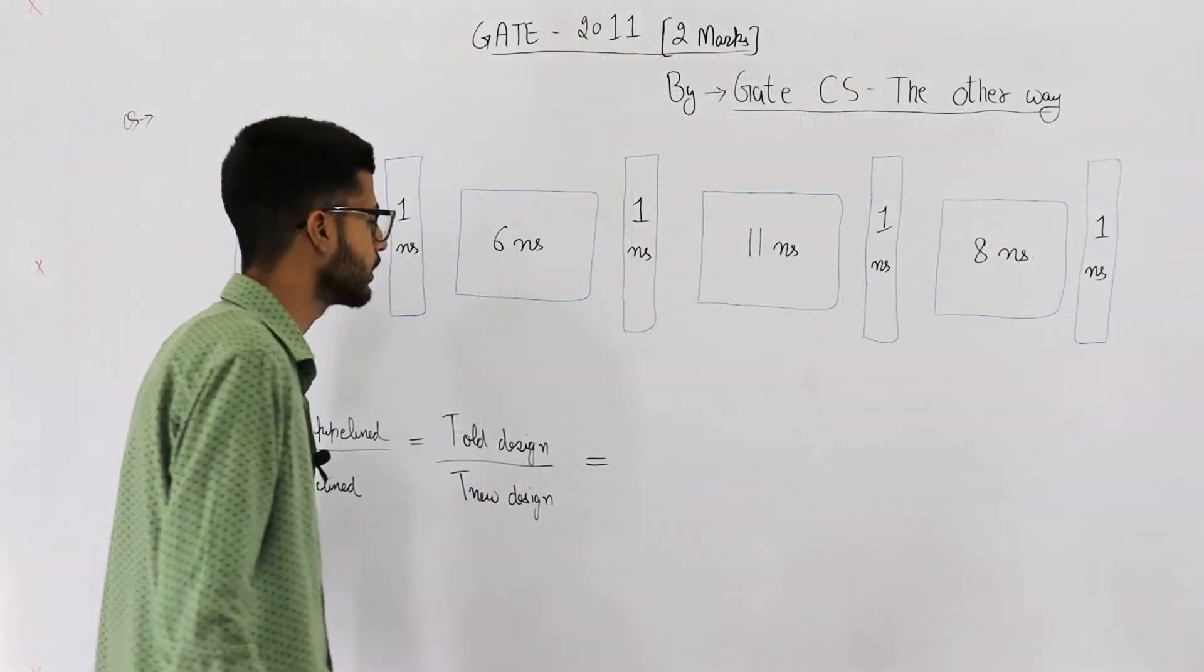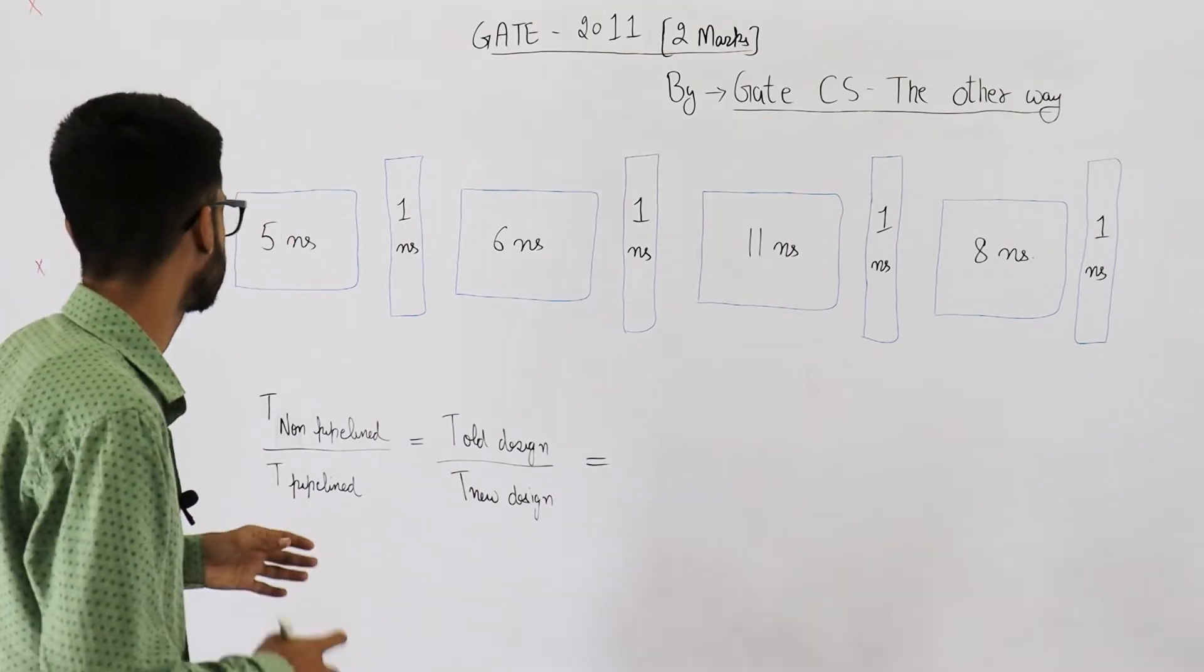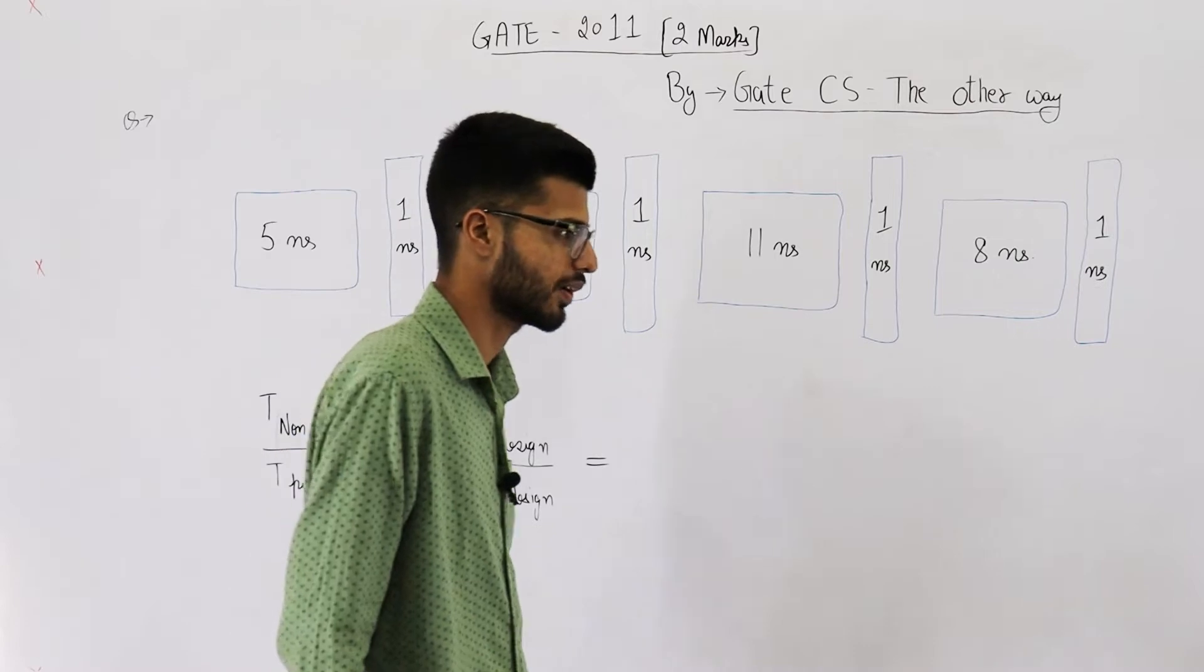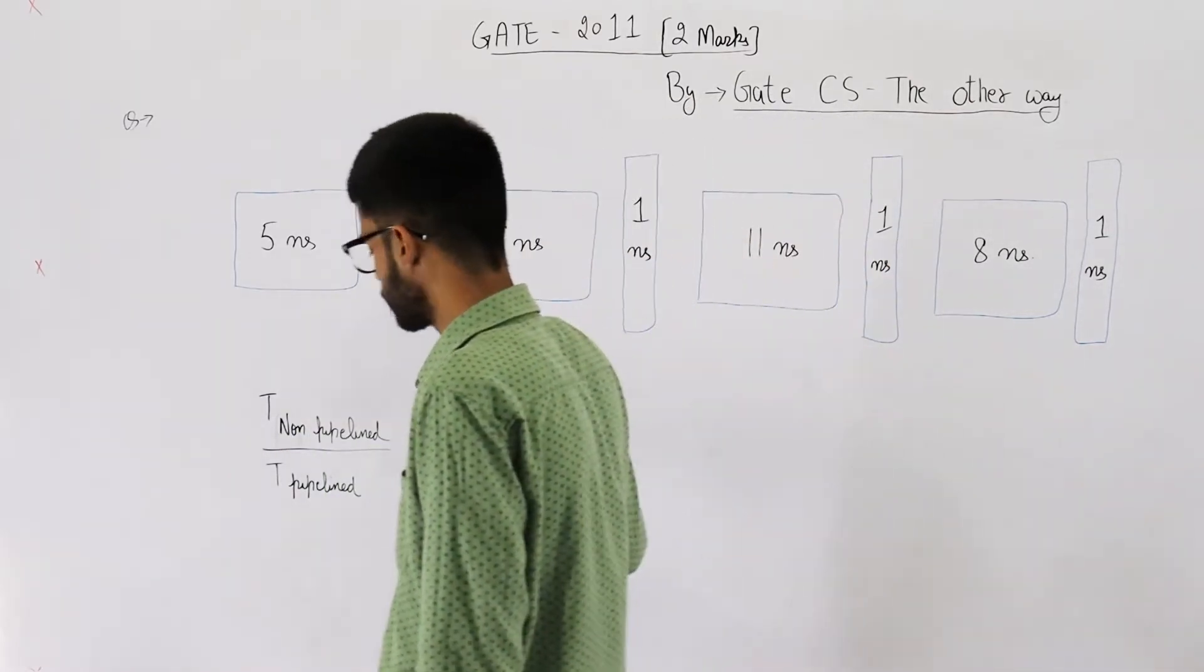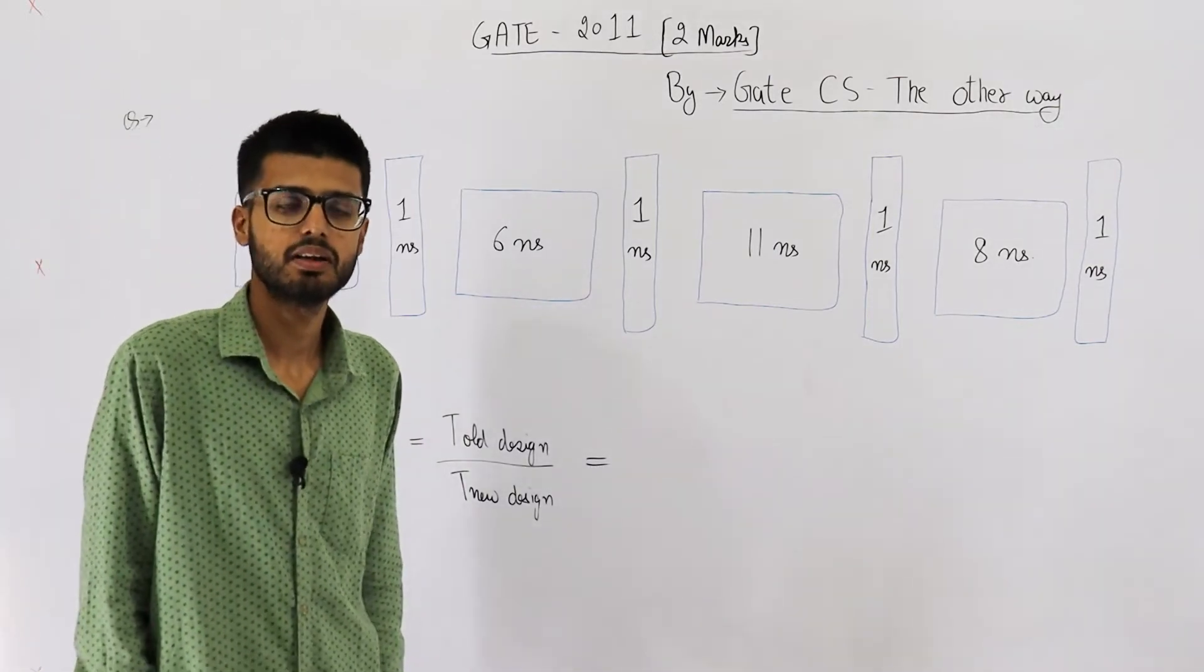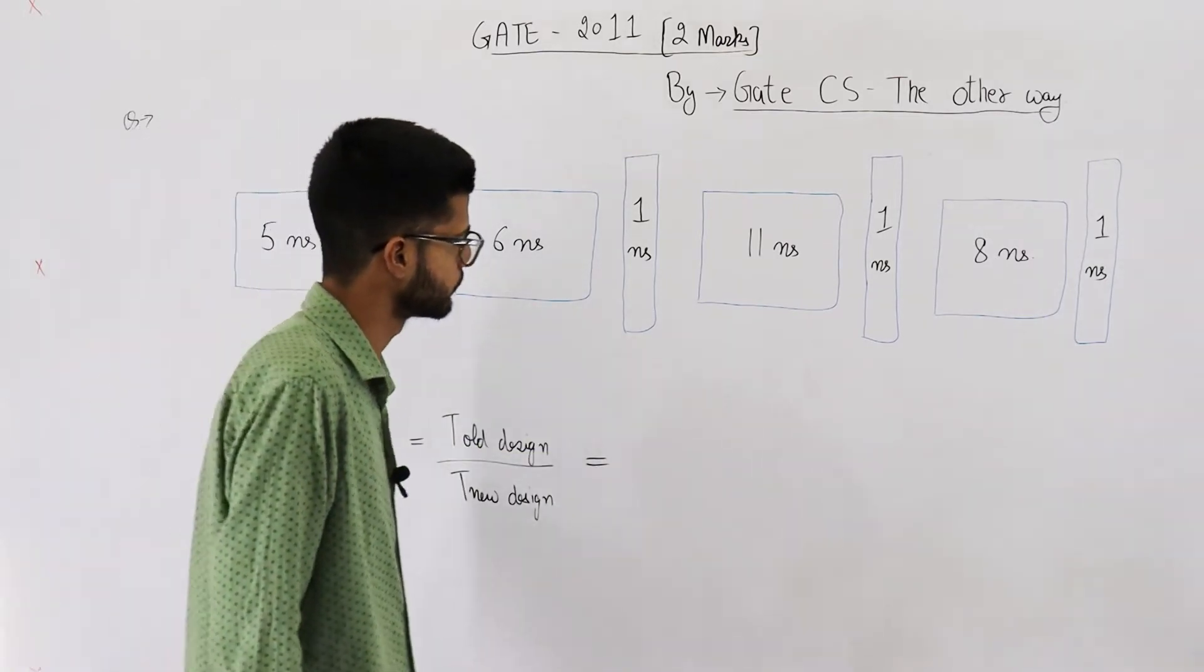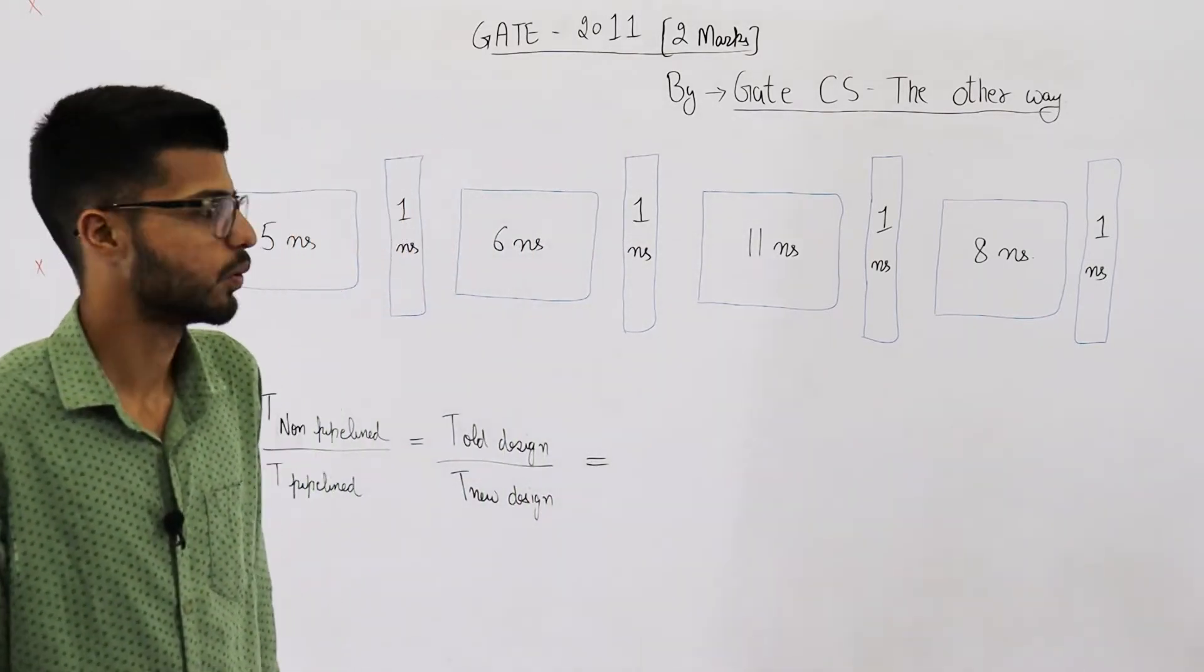You are required to find the speedup and formula for speedup is time taken by non-pipelined version divided by time taken by pipeline version to execute one instruction. Or it's the time taken by old design divided by time taken by latest design or new design. So these are the four stages of pipeline. First of all, let's analyze what will happen in a non-pipelined version.